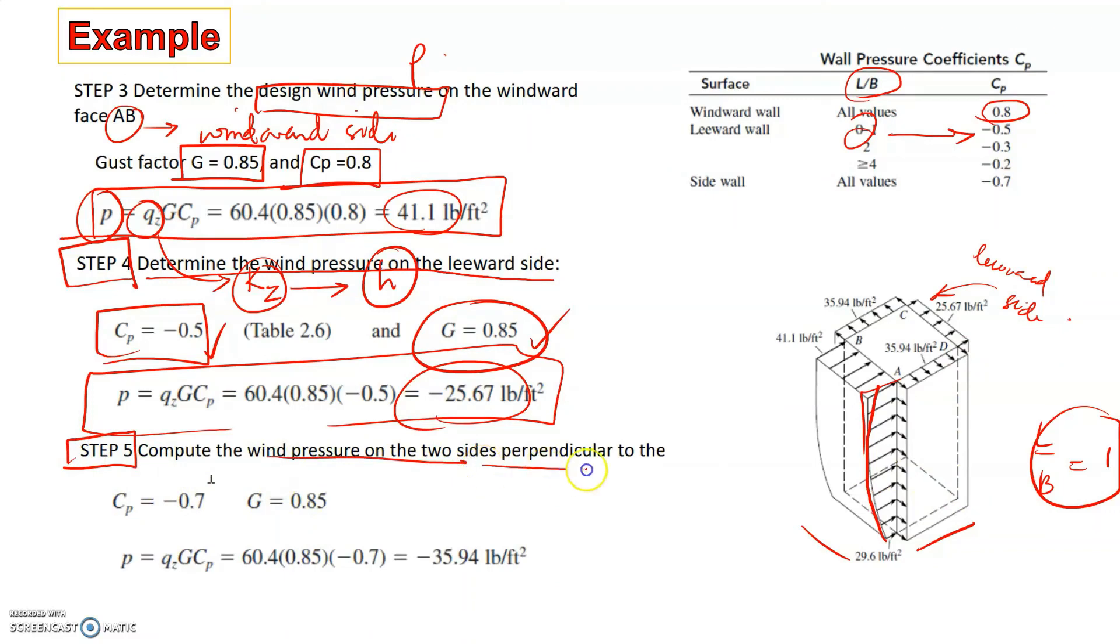The next step is to compute the wind pressure on the other two sides, just perpendicular to the wind pressure here. We see that the Cp value is minus 0.7 all the time, and G is 0.85. We substitute all of it, and we get the value of design wind pressure on the side walls as minus 35.94.